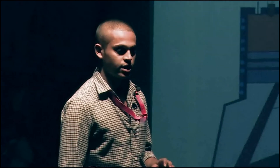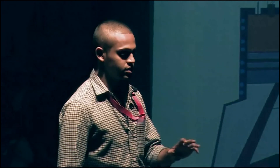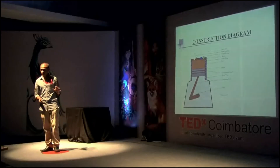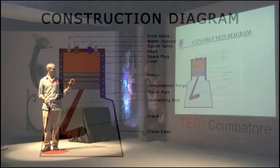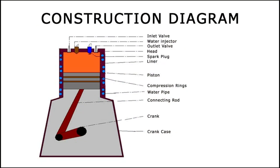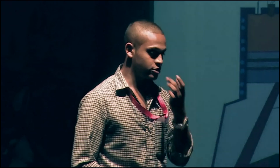This is the construction diagram of our engine, which has a blue injector shown in blue, through which we introduce or inject the fuel for the secondary power stroke.